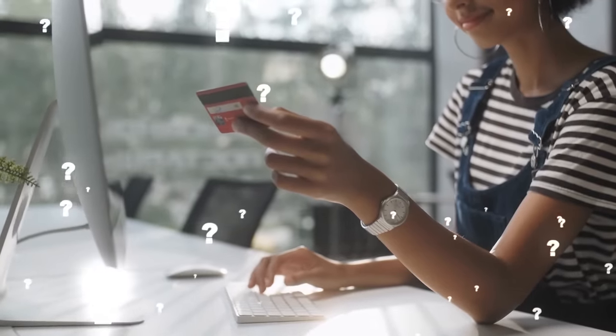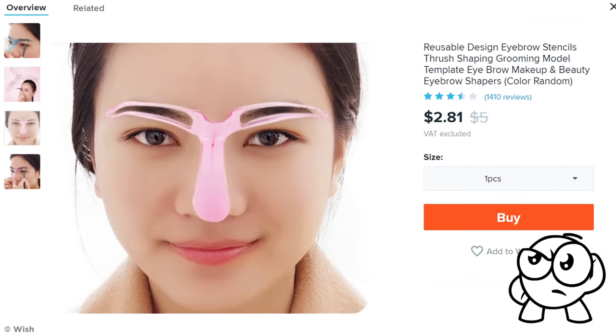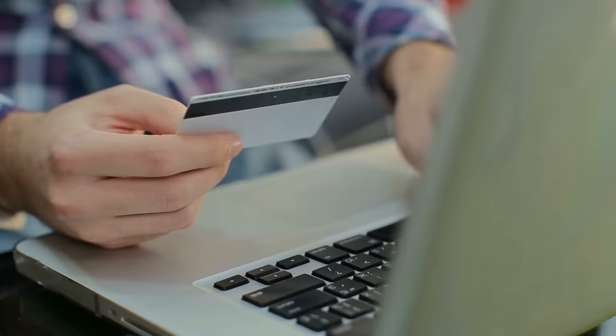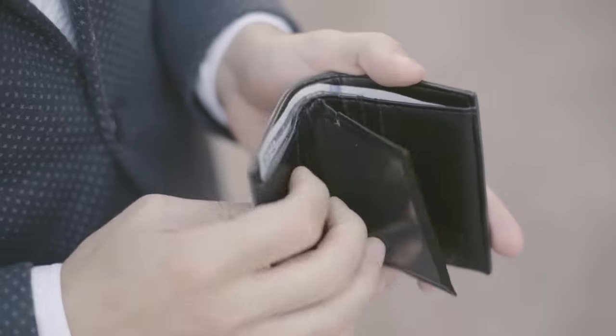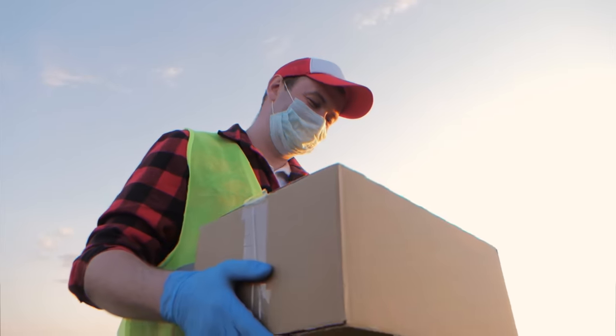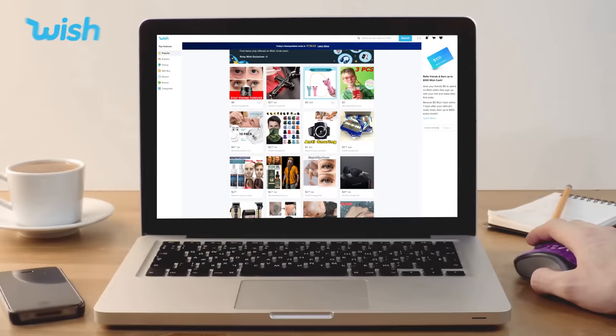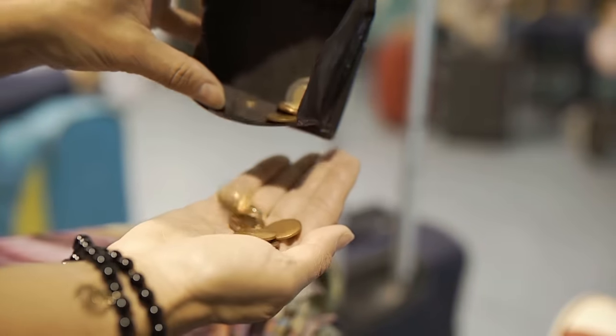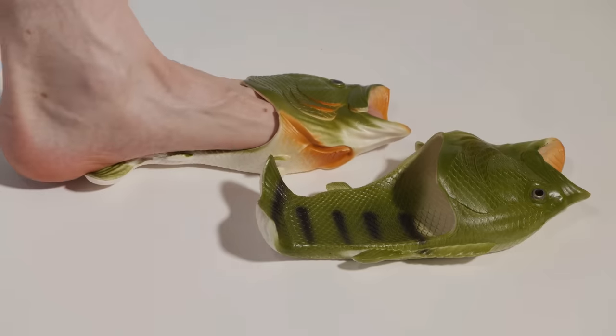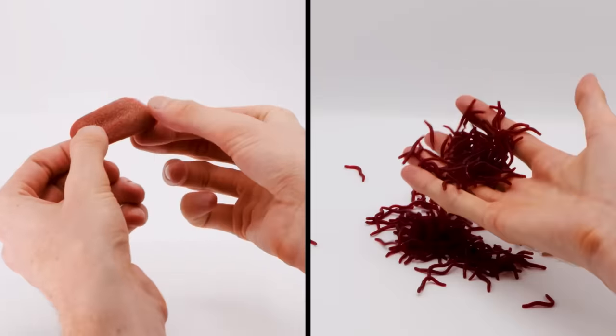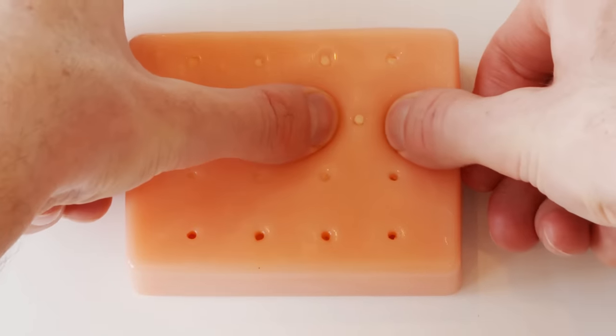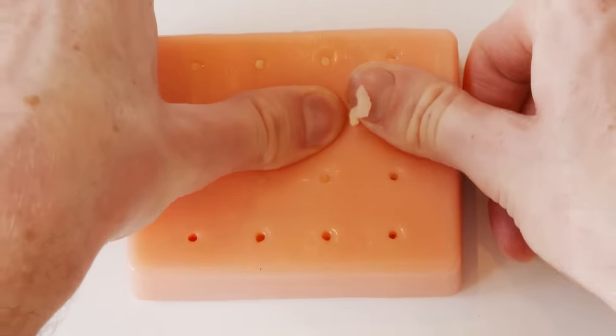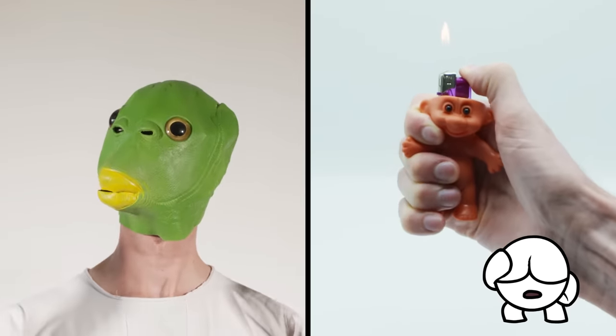Have you ever been shopping online and come across products that look too weird to be real? You almost want to purchase them just to see what the heck they are. Well, put your wallet away because I've already bought them for you. I've been trawling through Wish.com, the online marketplace where you can buy just about anything for next to nothing. And I mean anything. So I've bought the weirdest, craziest, and most insane products I could find just to review them for your viewing pleasure. Now sit back and relax as we take a look at some of the stupidest stuff I've bought in my entire life. My credit card company is going to have so many questions.